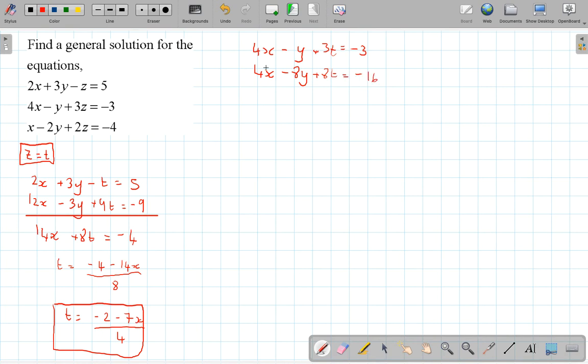So it gives me 4x's minus 8y plus 8t and minus 16. Now remember, I want to get rid of the x's. So I'm going to take the second line, this one, take away this one, is going to give me nothing. This one take away minus 8y is going to give me 7y.